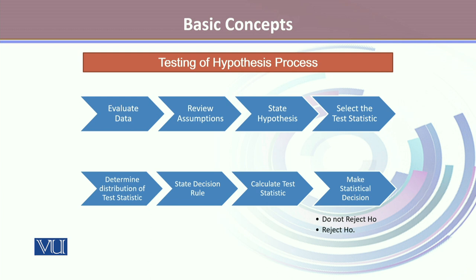Let's talk about the process of testing of hypothesis. Whenever we get data, we follow certain steps. The first step is to evaluate the data. Once the data is evaluated, we review the assumptions. Then we state the hypotheses — our null and alternative hypotheses. Once we are clear about the data, assumptions, and hypotheses, we select the test statistic we want to use. Once the test statistic is determined, we determine its distribution, which could be the Z distribution, T distribution, F distribution, chi-square distribution, or others.